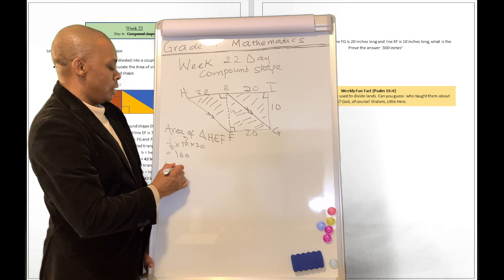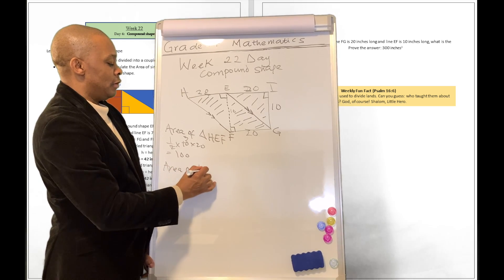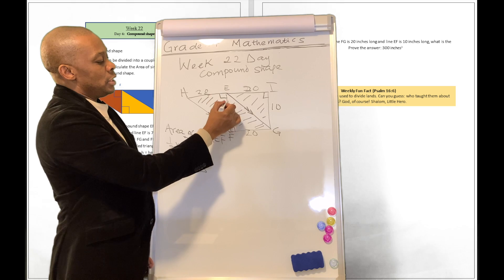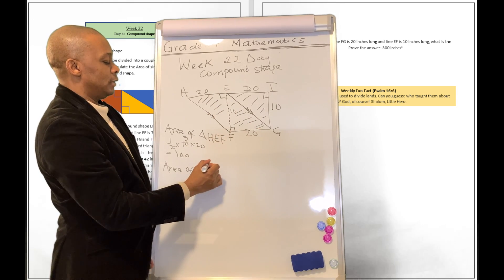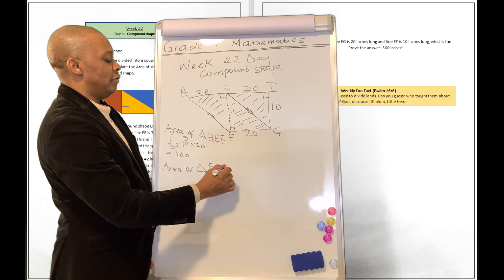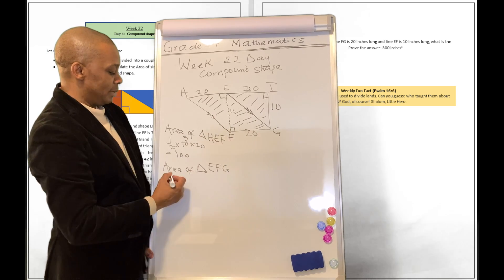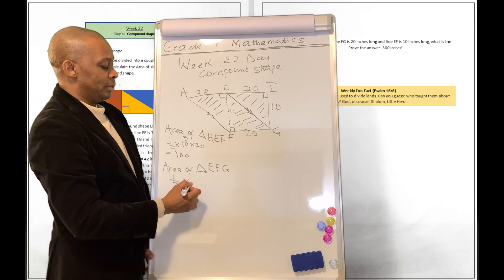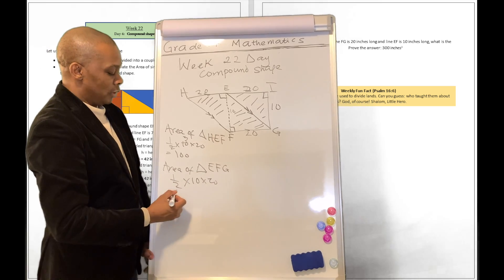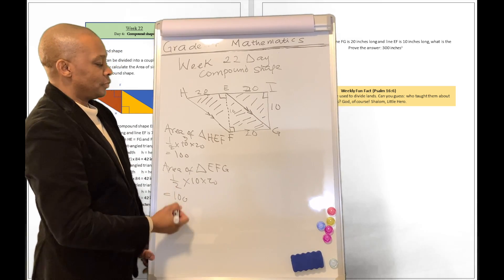What about area of right-angled triangle E, F, G? That's going to be half multiplied by 10 multiplied by 20, which gives us 100 as well.